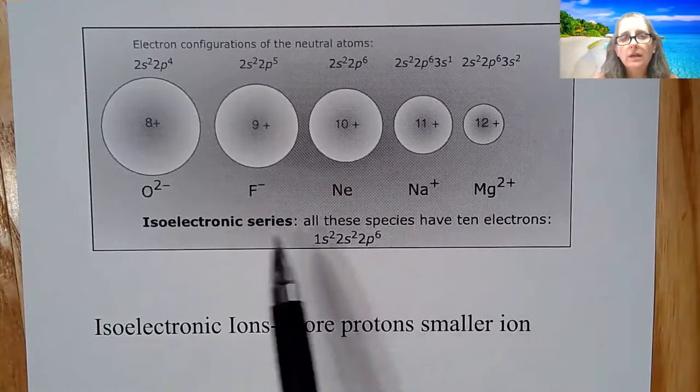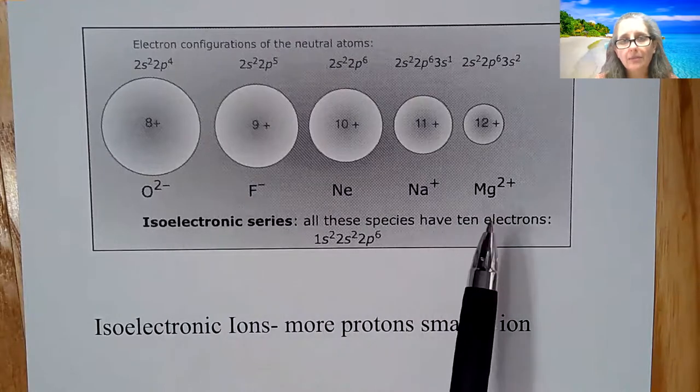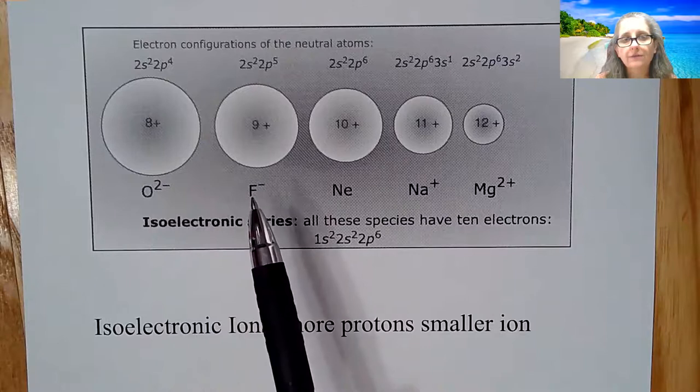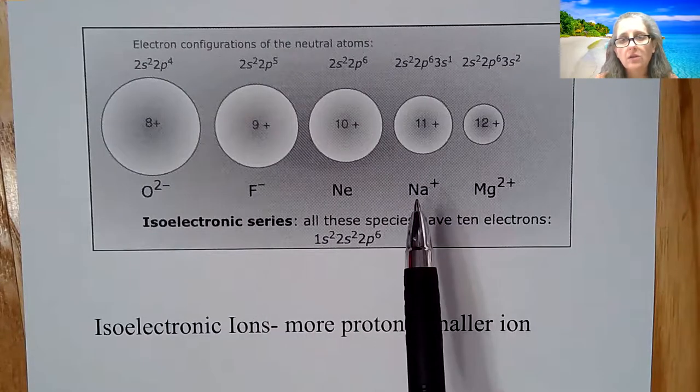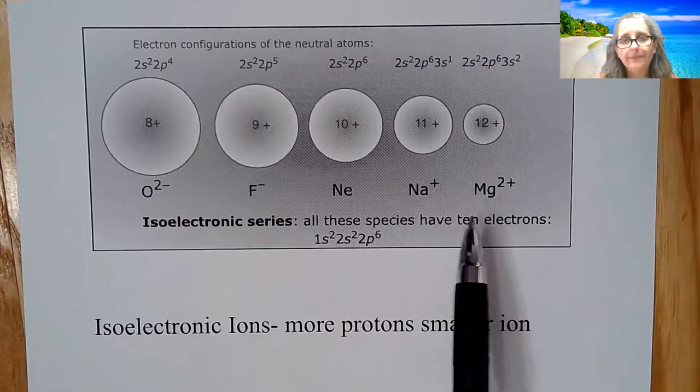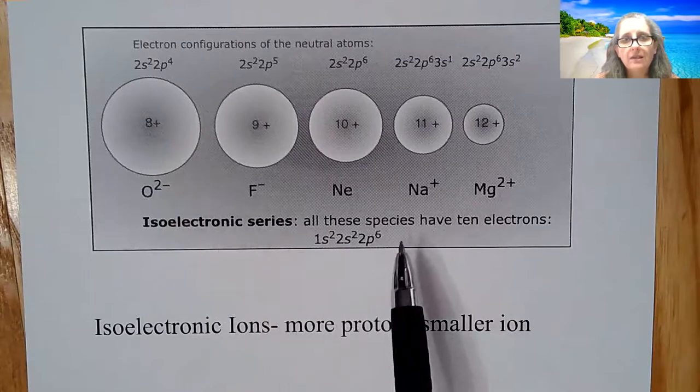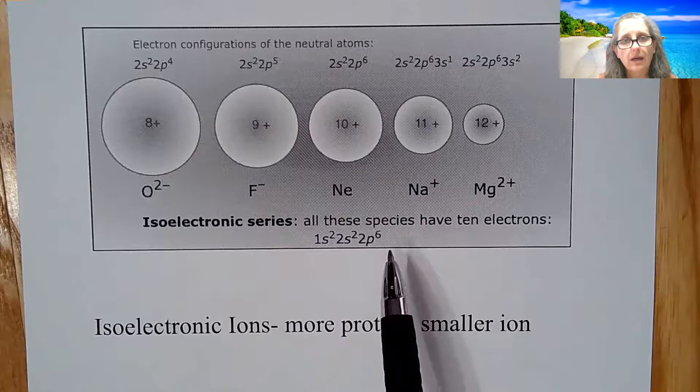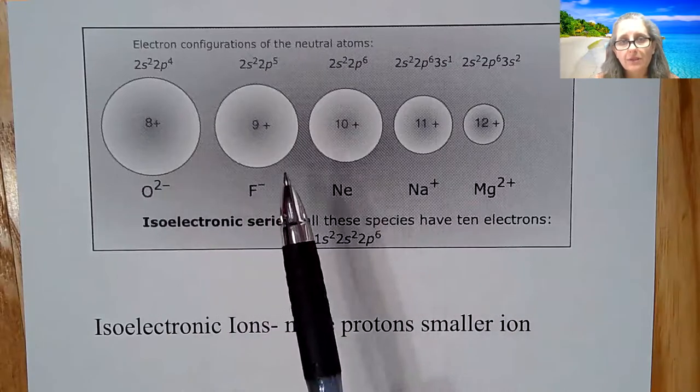So here is a pretty common example. If I look at oxygen as an oxide, fluoride, neon, and then sodium ion and magnesium ion, these all are going to have the same number of electrons. They have 10 electrons. But they are going to have different sizes.